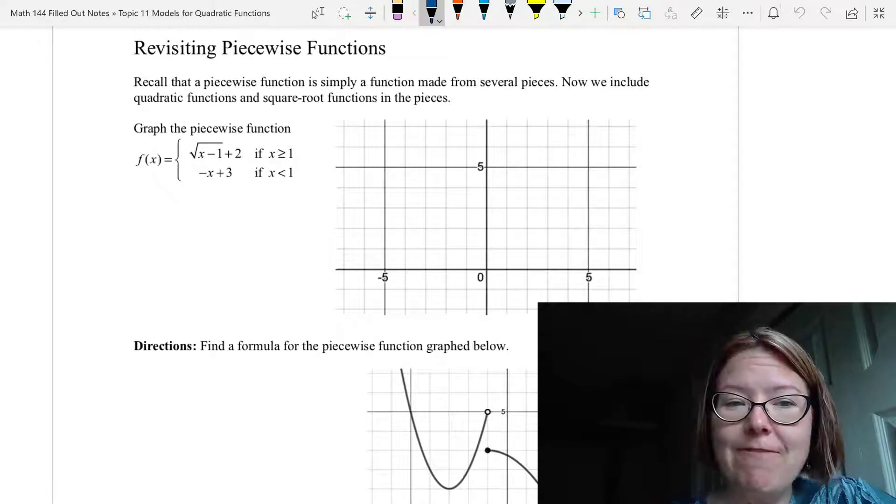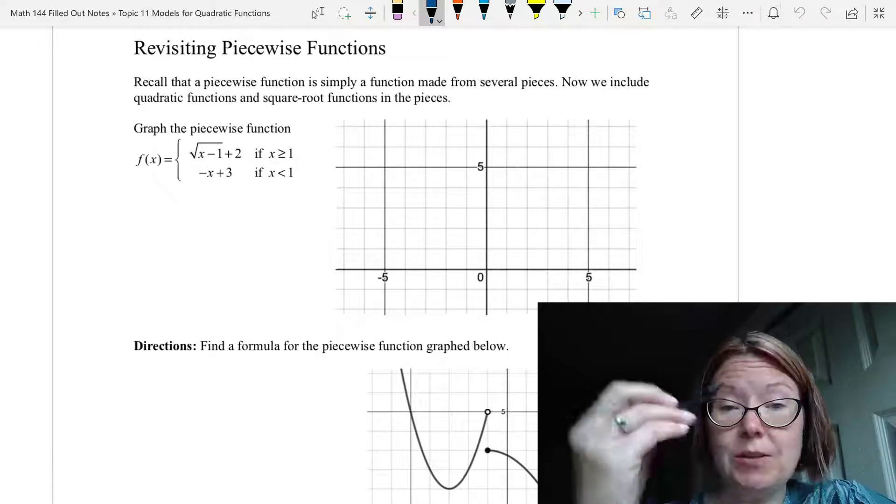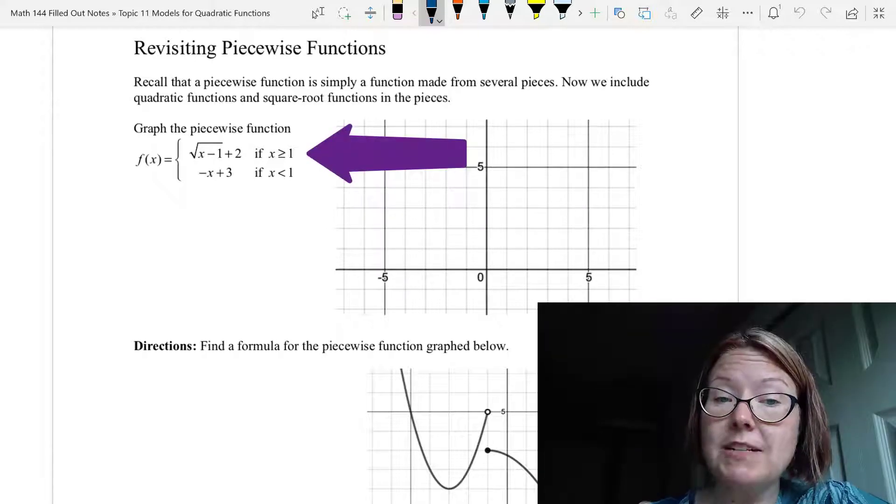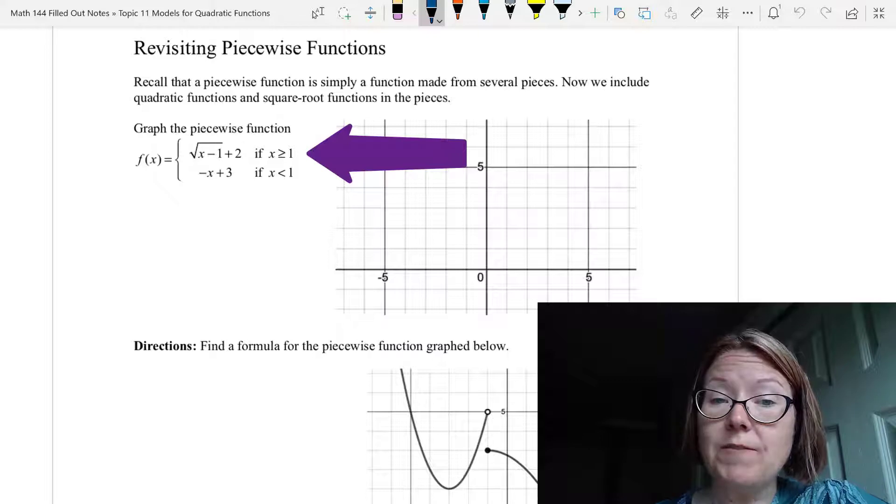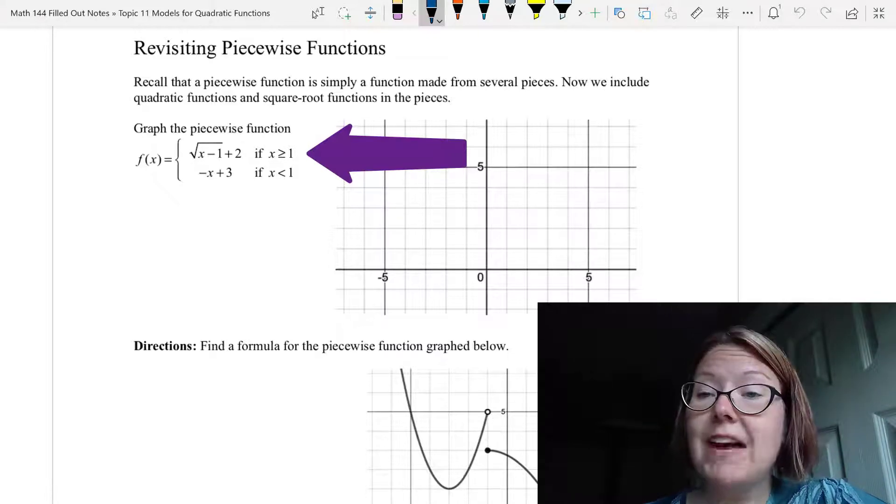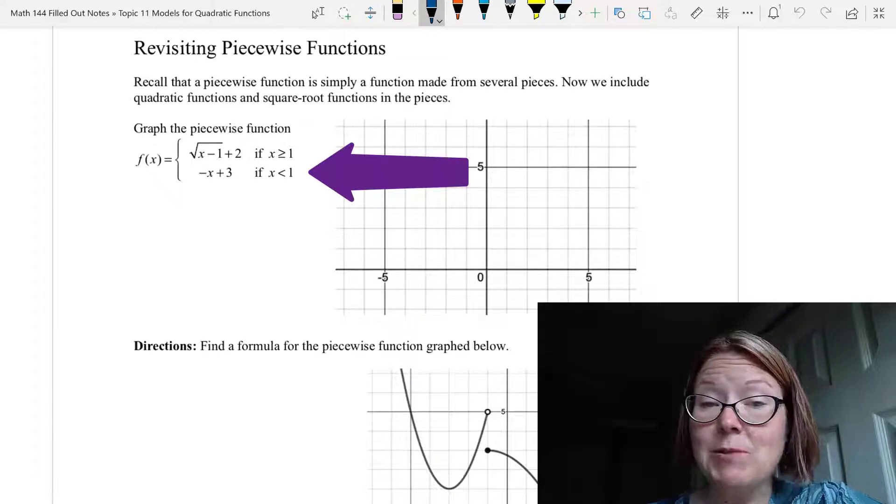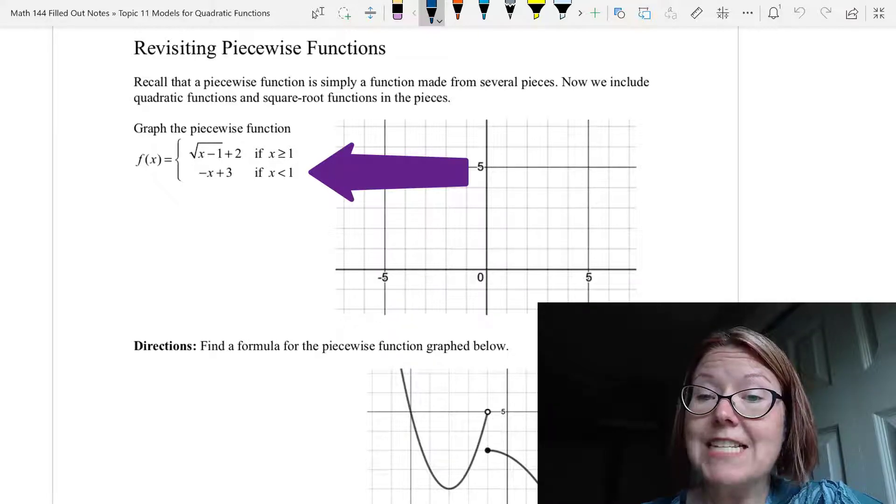We're going to start by practicing how we graph a piecewise function by graphing the function f(x) equals, with a curly left brace with two lines. The first line has the square root of (x - 1) plus 2, and this is true if x is greater than or equal to 1. The second line has negative x plus 3, and this is true if x is less than 1.